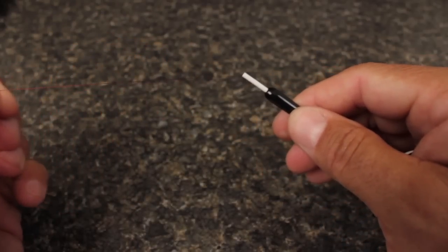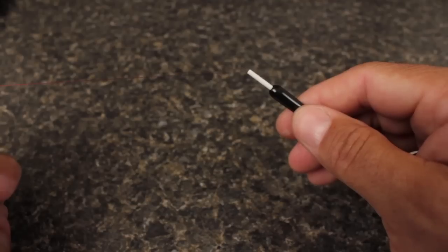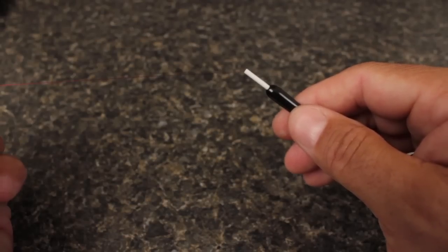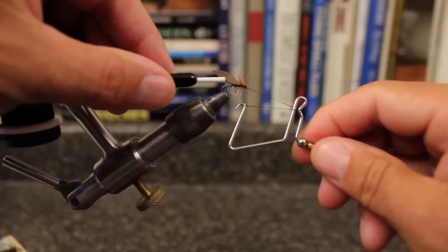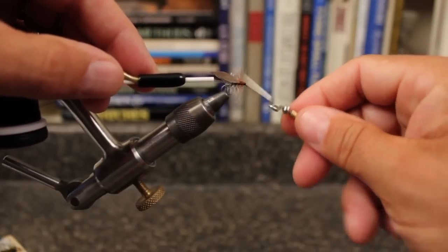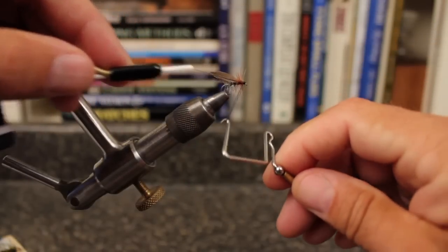The drag adjustment system on the RITE standard bobbin can be set anywhere from one to nine ounces of thread tension. The RITE standard bobbin is extremely versatile and very popular with tiers who focus mainly on patterns for trout.